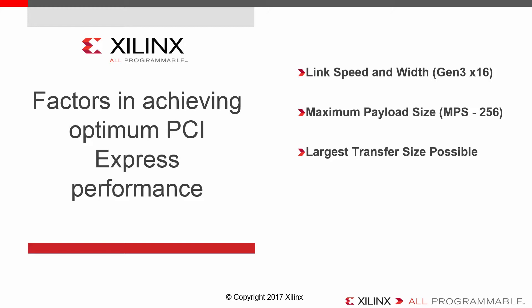When we look at things we can control in terms of how our design operates, we can control the size of the transfer we specify. The larger the transfer size, the better performance we're going to get, as we'll show in a minute. Next is the number of DMA channels we enable on our DMA controller — the more channels we enable, the better performance we get, though the trade-off is it takes more logic resources inside our device.